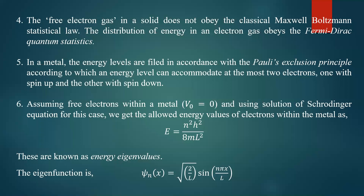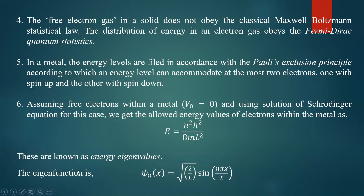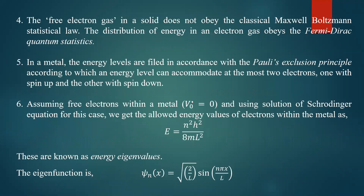To summarize the important assumptions of the Sommerfeld model: free electrons are the valence electrons. These valence electrons experience the electric field inside the solid, giving rise to the band theory of solids. The mutual repulsion between electrons is neglected, and the attractive interaction of ions is assumed to be uniform. The potential energy of the electron inside the metal is very small, almost zero, but higher outside, and the potential energy for an electron is periodic in accordance with quantum theory.